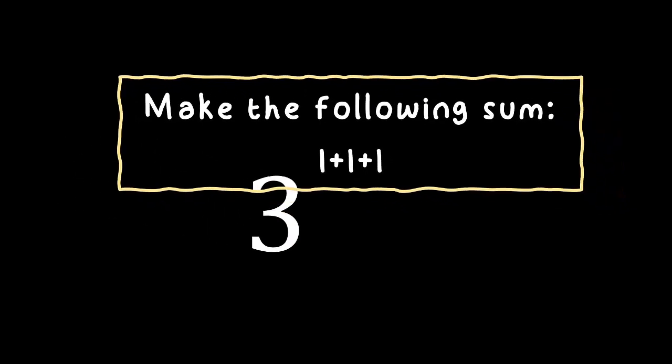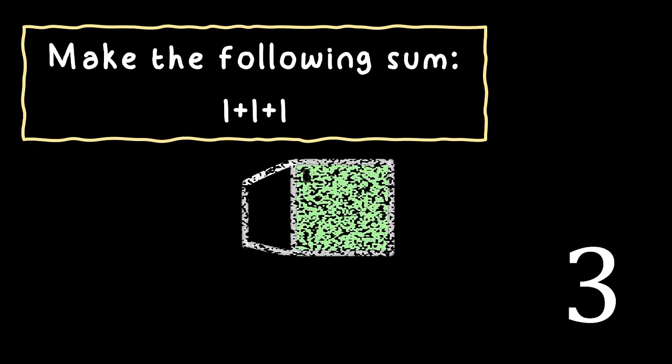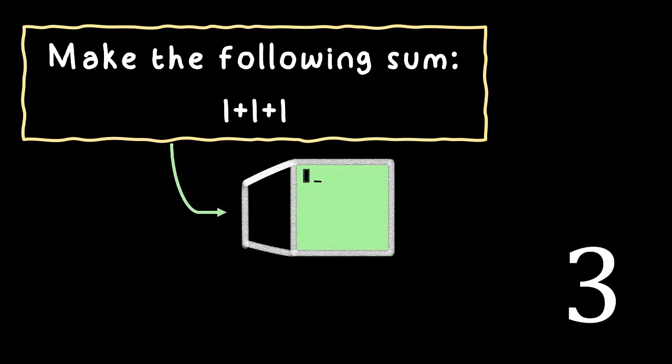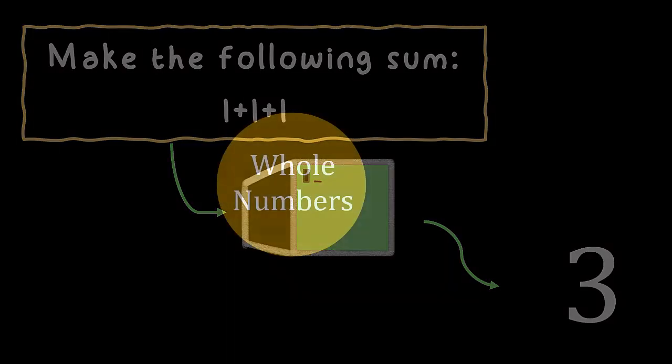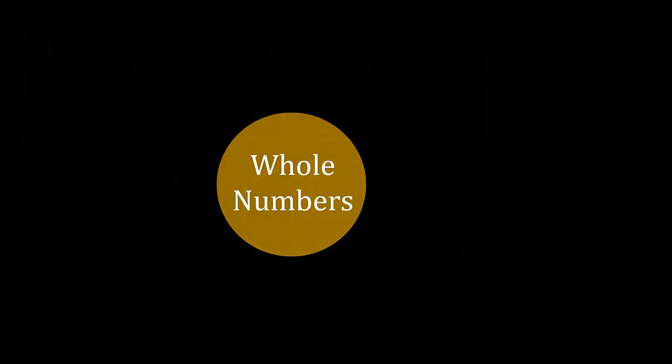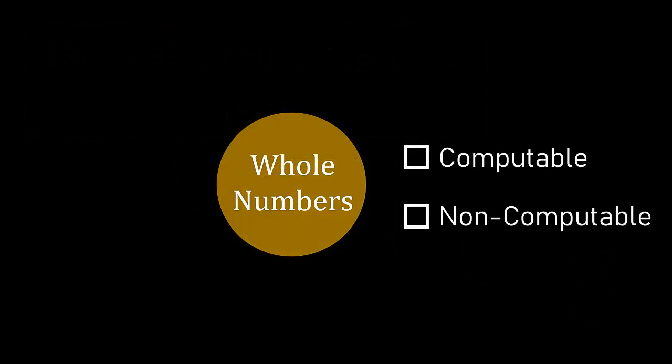That is what we call being a computable number. When you can give a recipe, an algorithm, to describe completely such number. And the reason it's called computable is because you can compute such number, which is also the way we describe the process of giving the recipe to a computer and letting it make the calculations. Following the reasoning we just made for the number 3, we can do it again for every single whole number, and therefore we say whole numbers are computable.